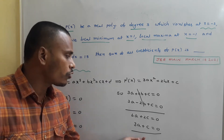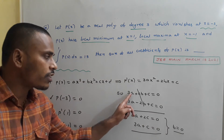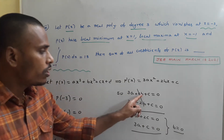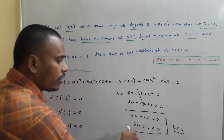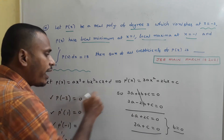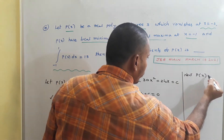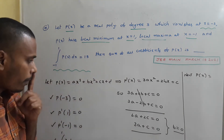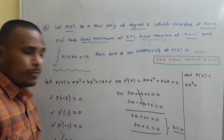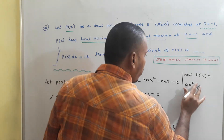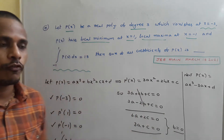Since 3A + C = 0, substituting back into 3A + 2B + C = 0 gives B = 0. With C = -3A and B = 0, we rewrite P(x) = Ax³ - 3Ax + D.